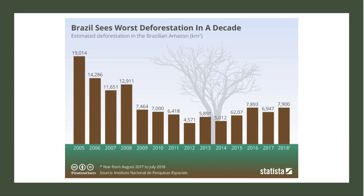The progress made by Brazil over a decade ago in making substantial cuts to deforestation appears to have gone into reverse, in part because of the election of President Bolsonaro, who was elected in 2018. He's the leader of the right-wing social liberal party and is sometimes known as the Trump of the Tropics. His attitude to deforestation has marked a change in policy.